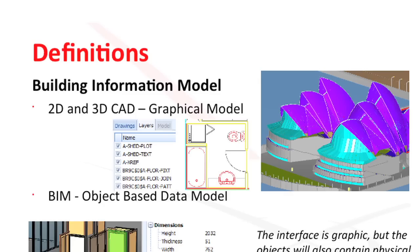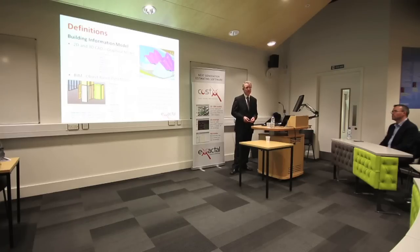BIM is object-based data modelling. The designer literally builds a model out of a kit of parts from a database-driven library of objects. If they want to put a door in a building, they go to their library, select a door object, place it in the building. The door knows that it's a door — it carries properties relating to the door, and importantly its interrelationship with other objects. When placed into a wall, the wall knows there's a door and an opening gets formed. It's that interrelationship of objects that provides a lot of the power of BIM modelling.